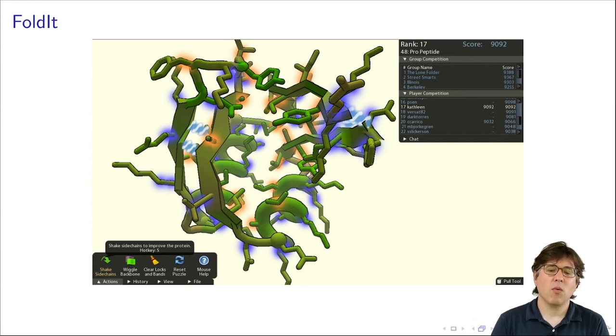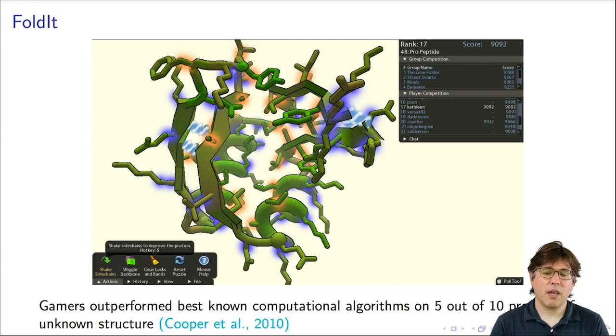And so out of that this project Foldit was formed. And so they created a game like what you see here where a player in the game sees this protein and then has the opportunity to reshape the protein to try to move it into its lowest energy configuration. So you can shake and wiggle and do other things to the protein and then you can see the score and you get more and more points as you move to a lower energy configuration. So it's kind of like a big puzzle and many people found this kind of puzzling to be very enjoyable even people who didn't have a lot of training in biochemistry. And so what they found is that gamers were able to outperform the best known computational algorithms on five out of ten proteins of unknown structure. So what they showed is that people playing this game were able to accomplish something that was better than the state-of-the-art algorithms.